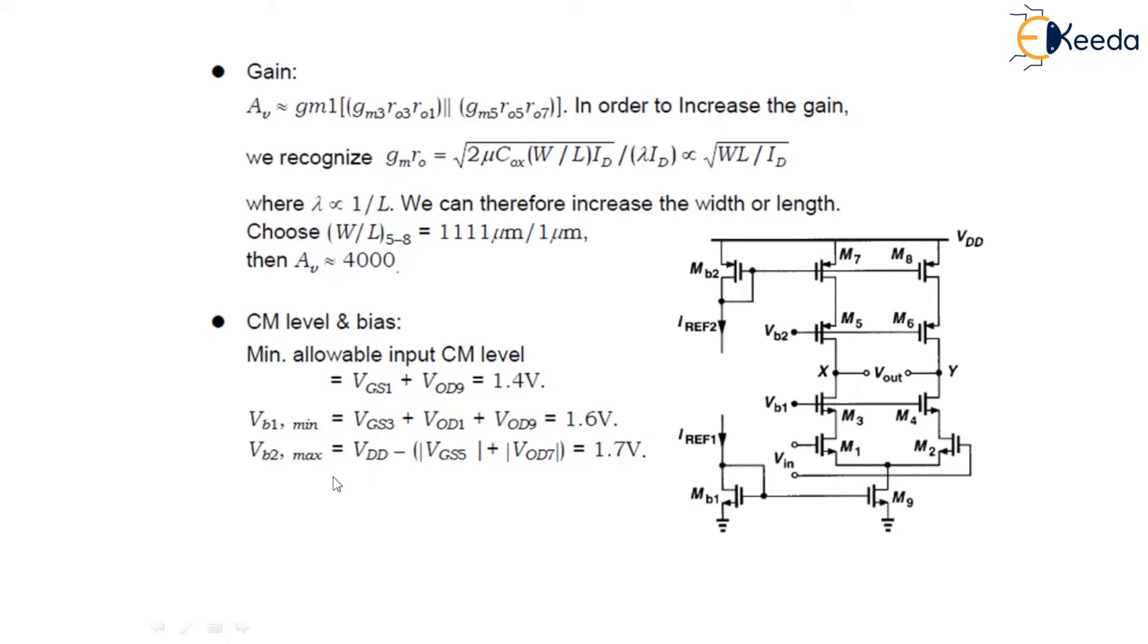So, the minimum input common mode level is VGS1 plus VOD9 which is equals to 1.4 volts. While the VB1 minimum is given as VOD1 plus VOD9 which is equals to 1.6 volts. It places the M1 and M2 at the edge of triode region.